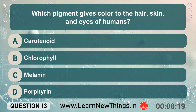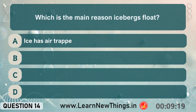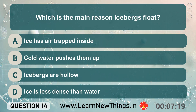Which pigment gives colour to the hair, skin and eyes of humans? Melanin. Which is the main reason icebergs float? Ice is less dense than water.